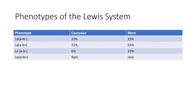Here are the phenotypes of the Lewis system and their percentages in the Caucasian and Black populations. The Lewis A positive, B negative phenotype is found in 22% of Caucasians and 23% of Blacks. Lewis A negative, B positive is found in 72% of Caucasians and 55% of Blacks. Lewis A negative, B negative is found in 6% of Caucasians and 22% of Blacks. The Lewis A positive, B positive phenotype is only found rarely.